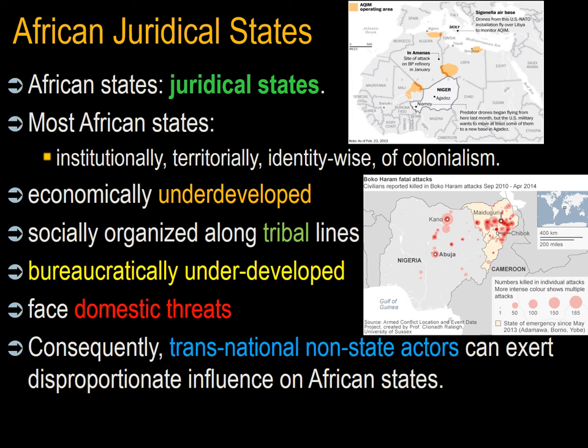The third type of state, which applies to Africa, is the juridical state. In contrast to European states, most states in Africa follow the logic of juridical states. Most African states are the result — institutionally, territorially, and in some cases identity-wise — of colonialism. These states tended to be economically underdeveloped and socially organized along tribal lines. Most African states are too bureaucratically underdeveloped to organize for interstate war and develop as a consequence of war like European states. African states face greater security challenges from their domestic populations than threats to their territory from their neighbors, essentially because borders were defined by the former colonial powers and not by the African states themselves, or by any geographically defensible logic.